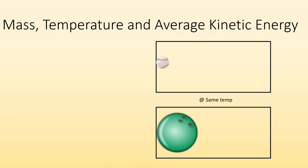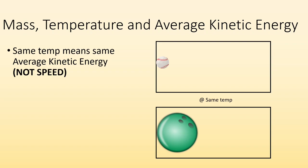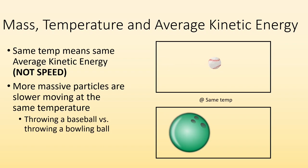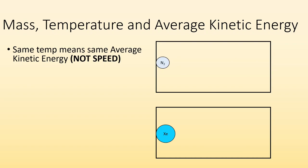Mass, temperature, and average kinetic energy. How are they all related? Well we know at the same temperature it means that things have the same average kinetic energy not speed. And what that means is more massive particles are going to be slower moving at the same temperature as less massive particles. I think about throwing a baseball versus throwing a bowling ball. If you put in the same amount of energy to a baseball that you do the bowling ball, the baseball is going to move a lot quicker and faster than the bowling ball does because it's less massive. So same temperature means same average kinetic energy not speed.